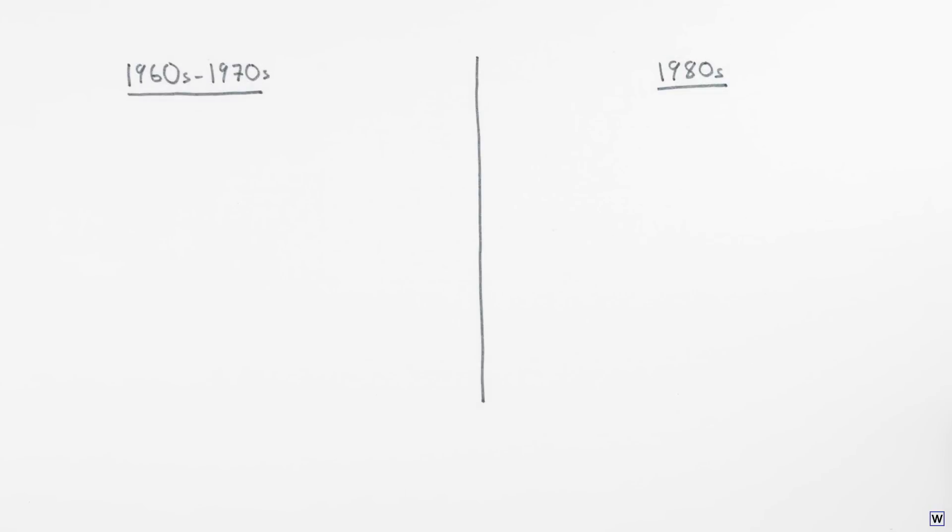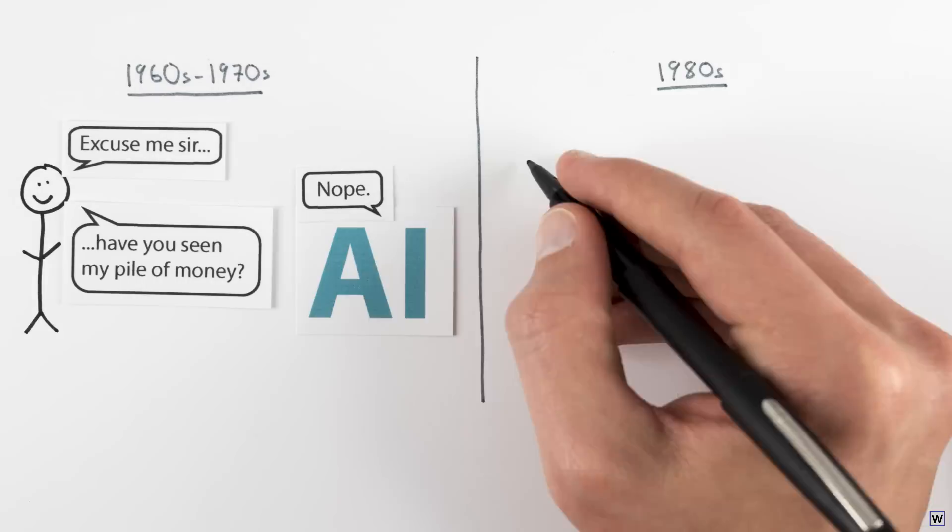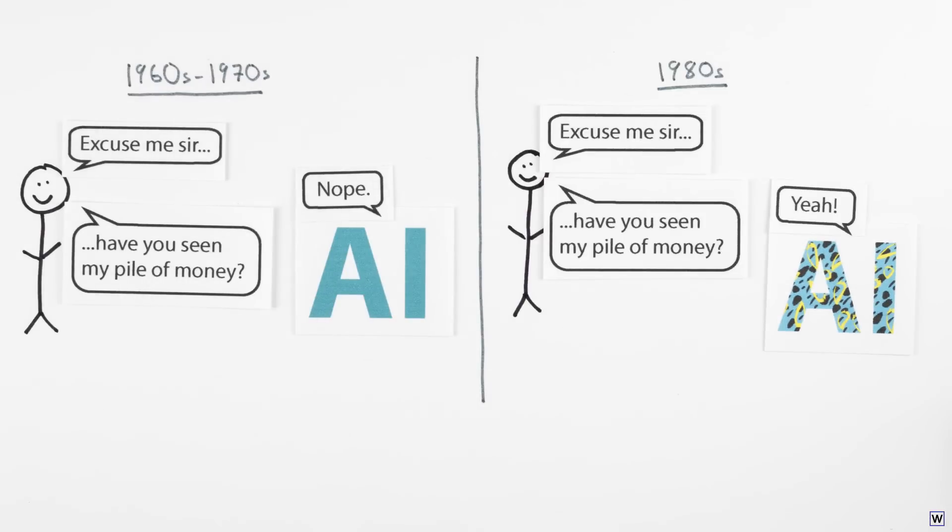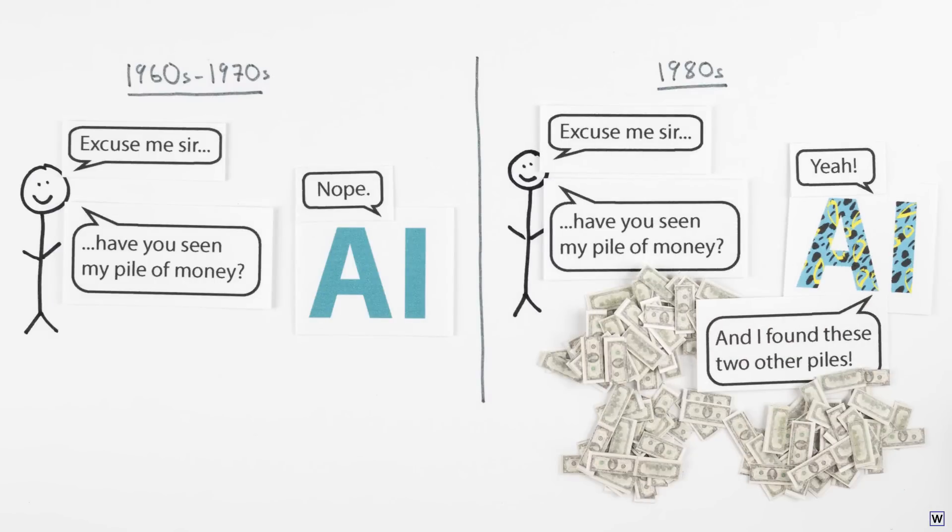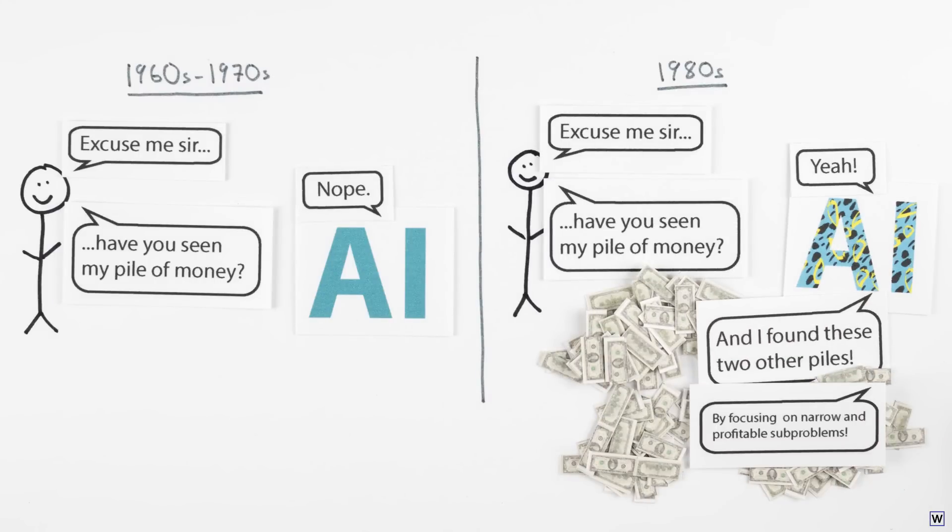Fortunately for us, AI came screaming back in the 1980s thanks to a newfound ability to make piles of money instead of losing them. To make these piles of money, parts of AI were dramatically focused onto narrow and profitable sub-problems.